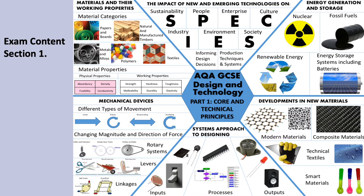Section one is just 20% of the exam and it's quick short answer questions and mainly multiple choice questions. As you can see from this slide, it's a quick overview of everything to do with design and technology, which is why it's called Core Technical Principles. We will be looking at papers, boards, wood, metal, plastic, and textiles, and we'll be looking at the properties of materials, developments in new materials, and smart materials. We'll look a lot at the environment and energy as well. A lot of this you will have been introduced to during Key Stage 3, so it should be familiar to you.